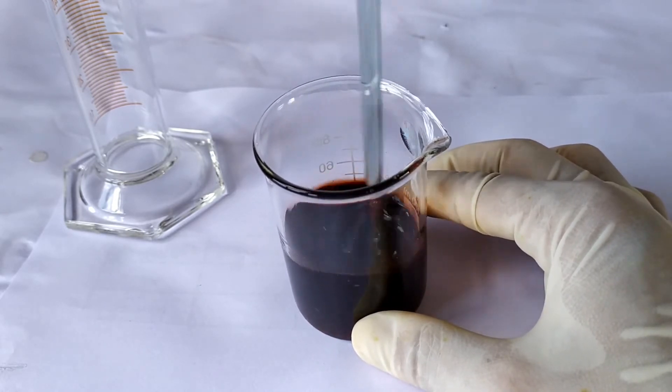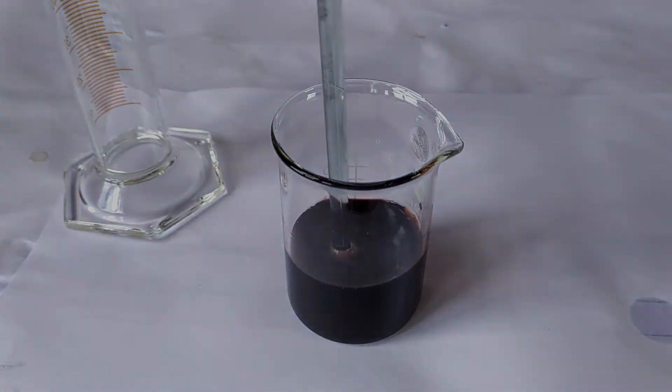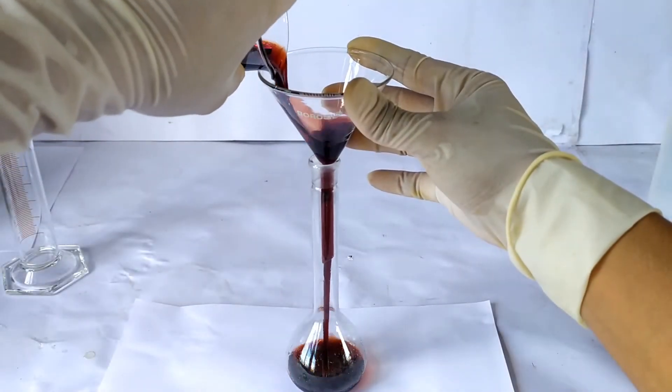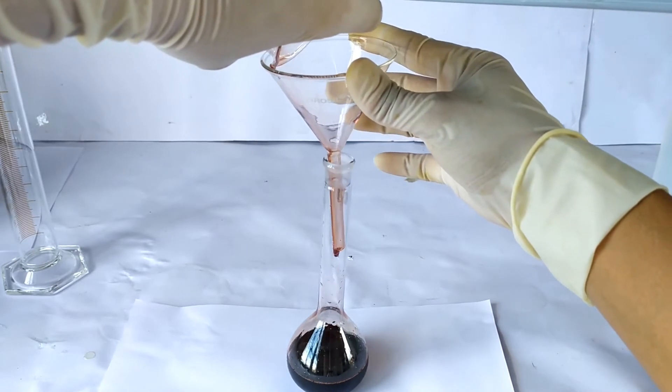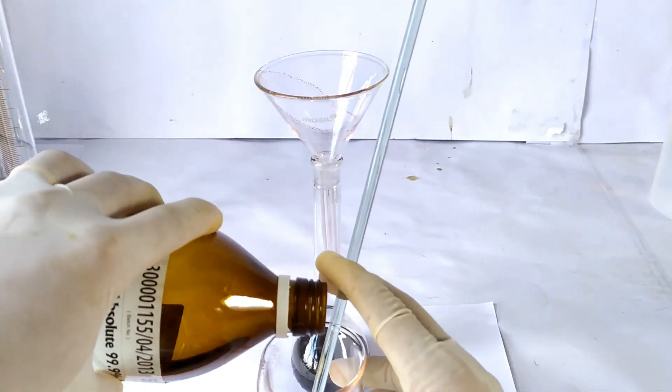Once the naphthol has completely dissolved, which takes just about a minute or so, transfer the contents of the beaker into a 100 ml volumetric flask or a graduated cylinder.